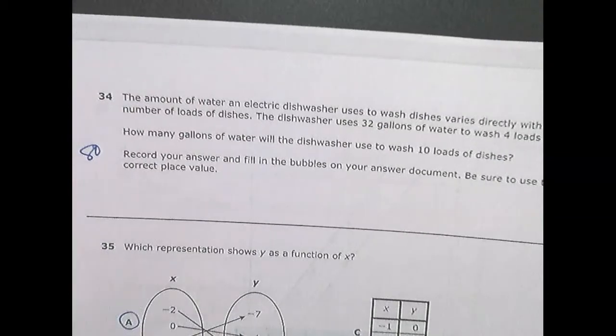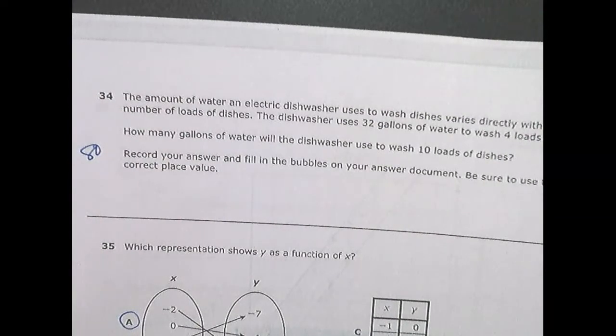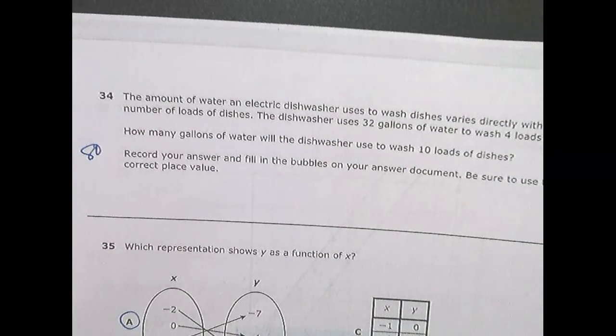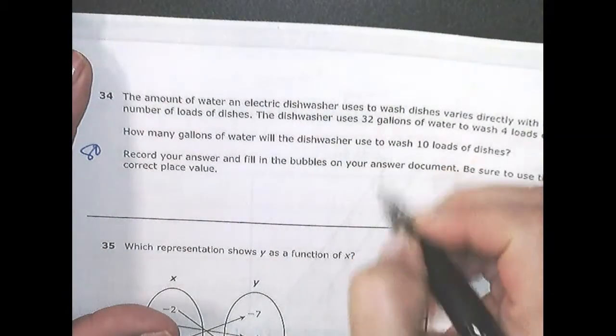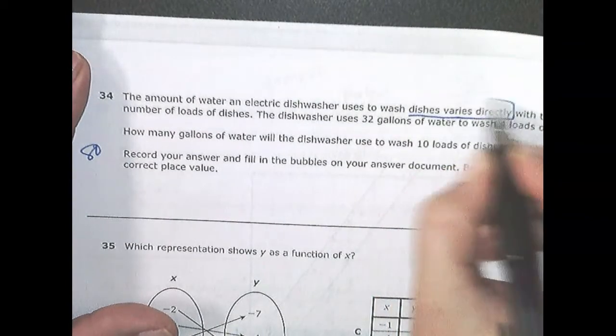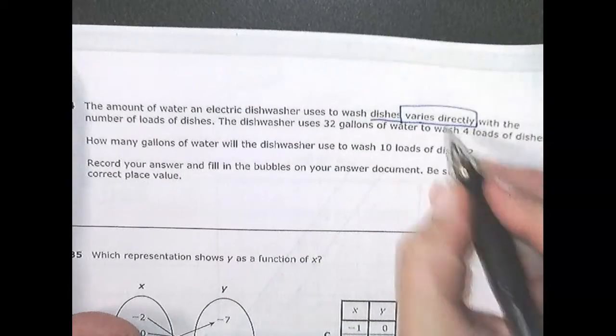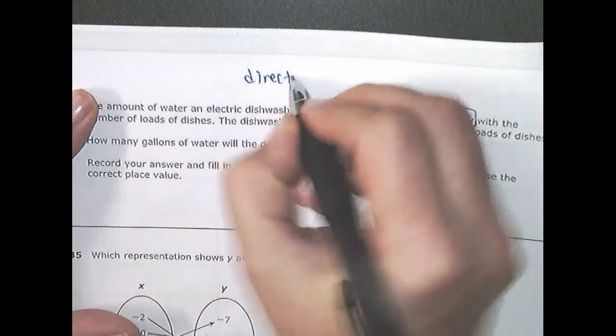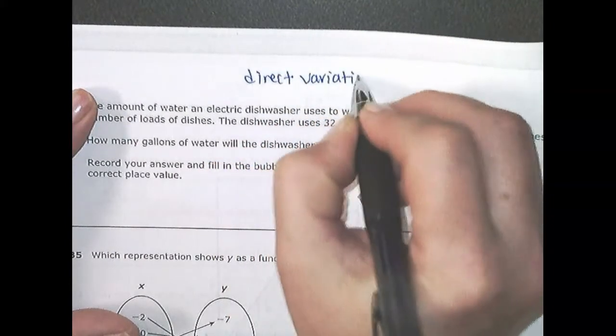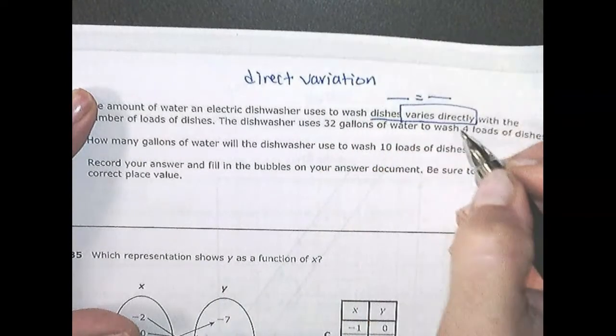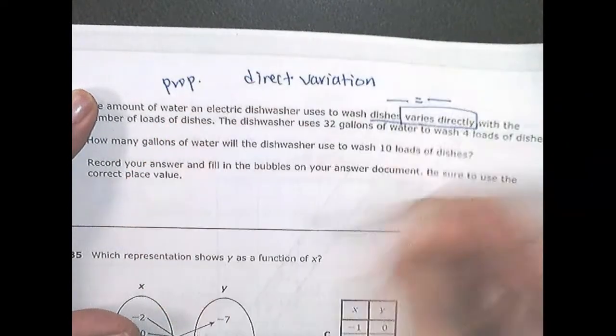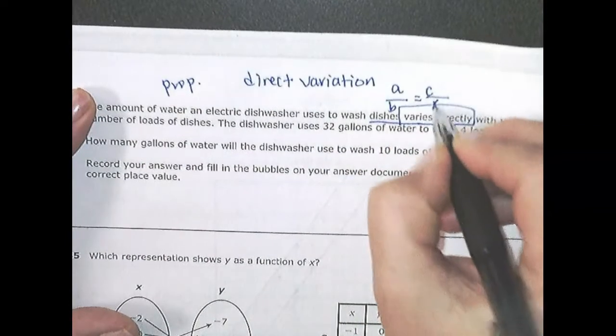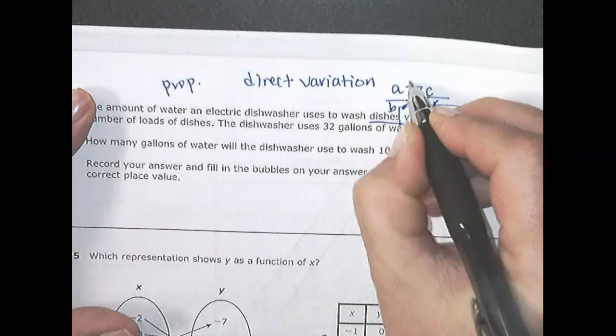Question thirty-four. The amount of water an electric dishwasher uses to wash dishes varies directly with the amount of loads of dishes. The dishes uses thirty-two gallons of water to wash four loads of dishes. How many gallons of water do you need for ten loads of dishes? The key word is right here. Varies directly. Right there. And what does varies directly mean? Direct variation. What does direct variation mean? Proportion. That means line, double line, line. It means proportion.